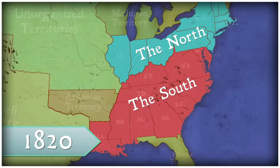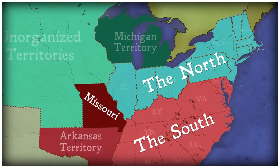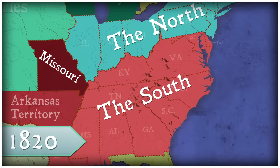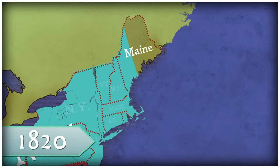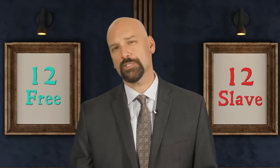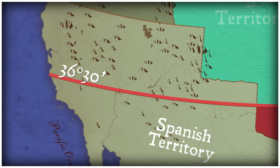But there's a third section as well — the territories: lands being settled as our country expanded, but not yet states. That is until Missouri decided it wanted to be a state. Missouri wanted to join the Union as a slave state, which the South was pretty excited about, but the North did not like. The 12th state would throw off the balance of power, so a compromise was needed. In 1820, Congress admitted Missouri as a slave state but also admitted Maine as the new free state. They also decided that in any future state north of latitude line 36°30', slavery would be banned. This was the Missouri Compromise.